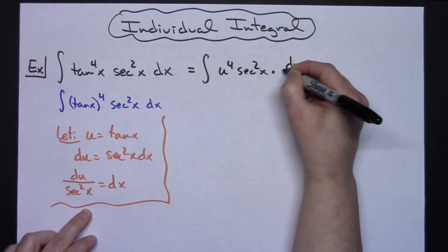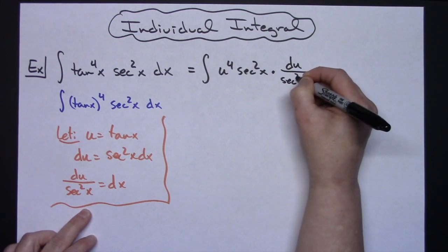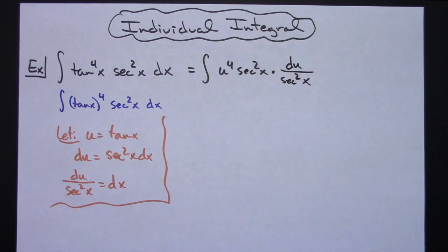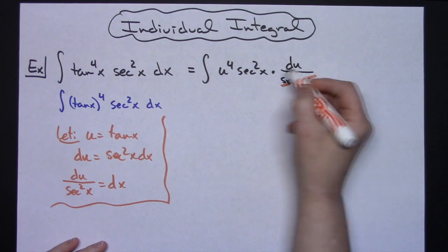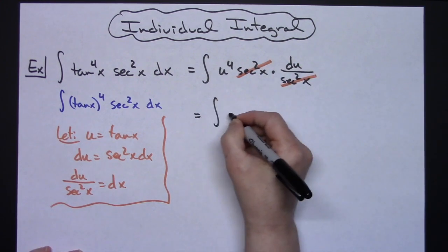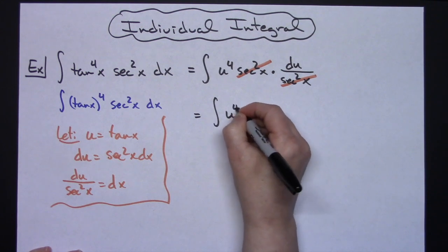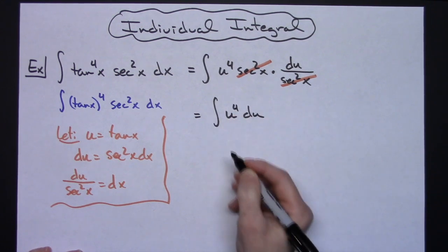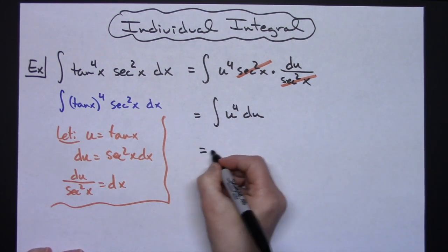That then is going to allow me to cross out those sec^2(x)'s, and then I'll be down to a nice little integral of u^4 du, and that's something that's relatively easy to integrate.